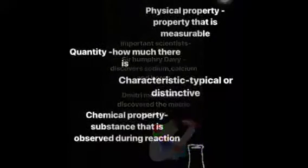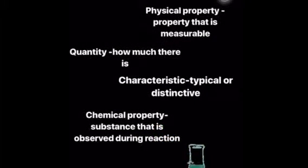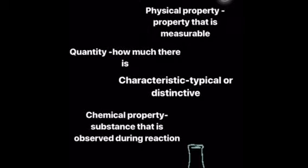These are the five big words for our project. Substance: real physical matter of which a person or thing consists of. Physical property: a property that is measurable. Quantity: how much there is. Characteristic: typical or distinctive. Chemical property: a substance that is observed during a chemical reaction.